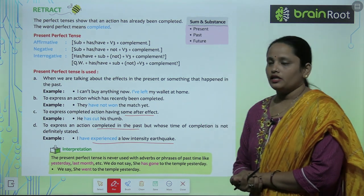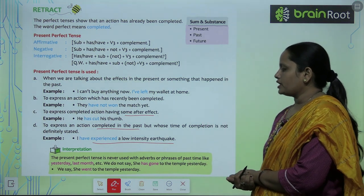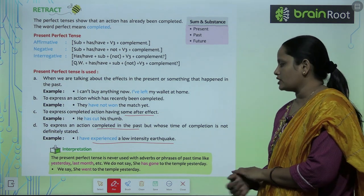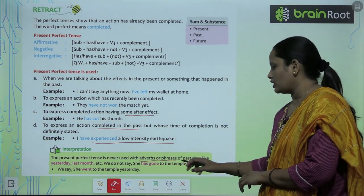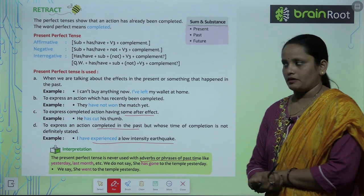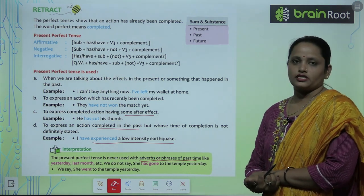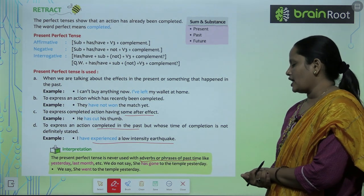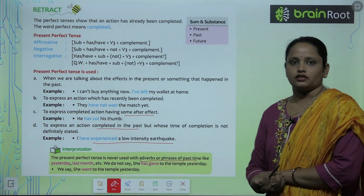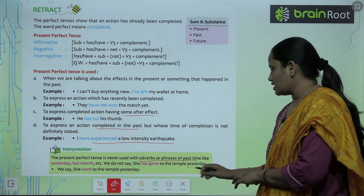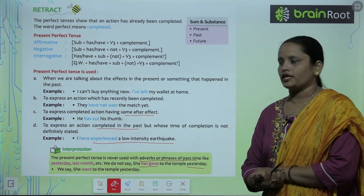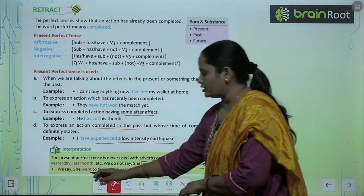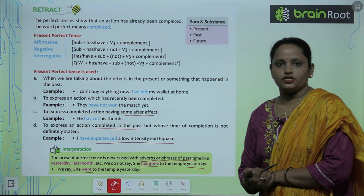The present perfect tense is never used with adverbs or phrases of past time like yesterday, last minute, etc. Hum present perfect tense in ke saath use nahi karte. We do not say 'she has gone to the temple yesterday.' Instead we say 'she went to the temple yesterday.' Has gone ki jagah went use karenge. Clear children?